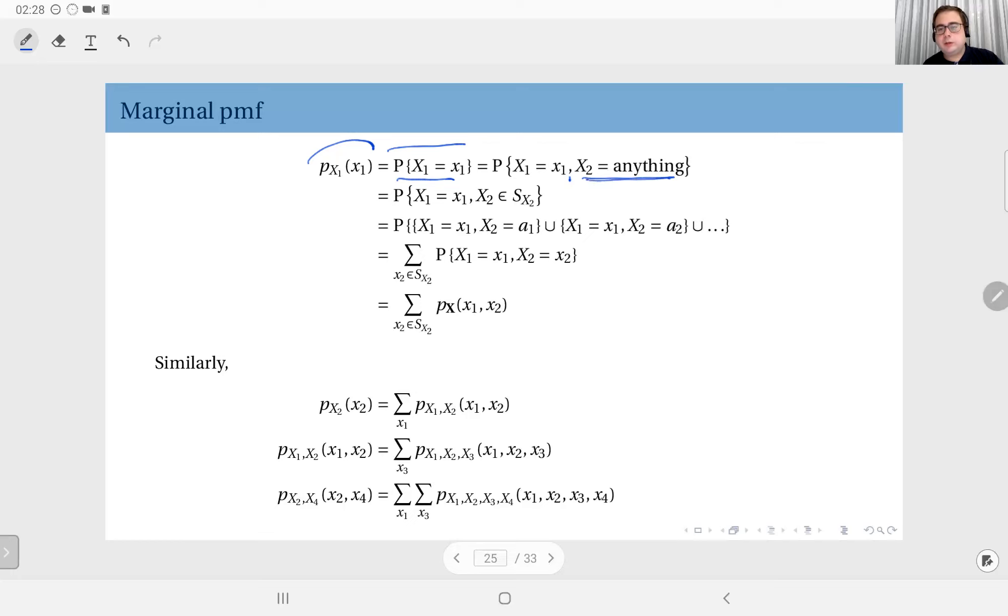Let's say that I have the joint PMF of x1 and x2. When you write this in this way, so that is x2 is in the sample space of x2, whichever set that might be, I can write this as x1 equals x1, and x2 equals a1, x2 equals a2, x2 equals a3, x2 equals a4. Well, because this is a discrete distribution, I can just list the outcomes or the potential values x2 can take.